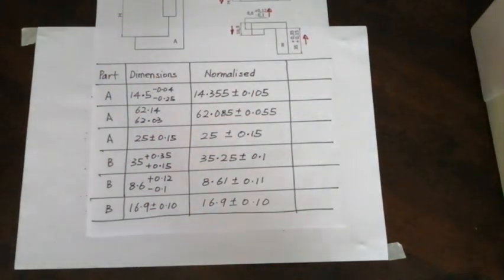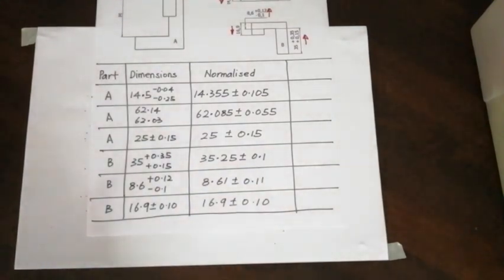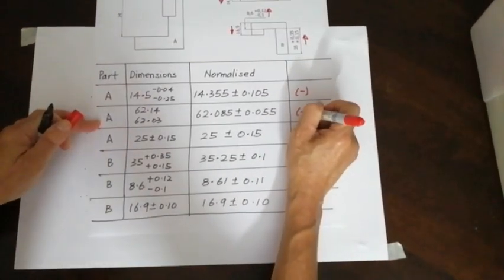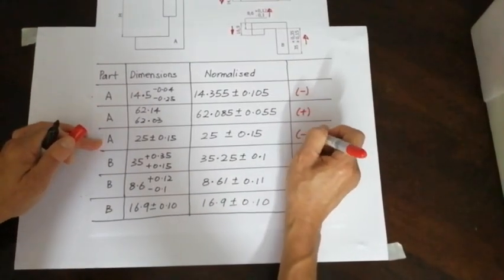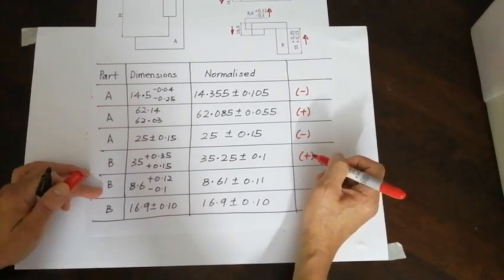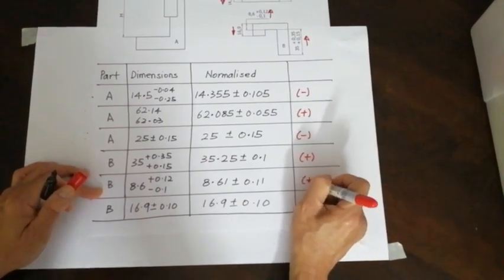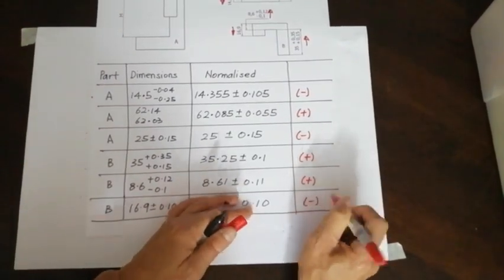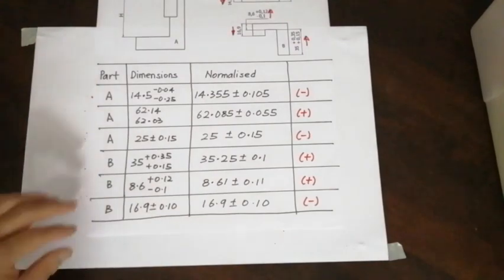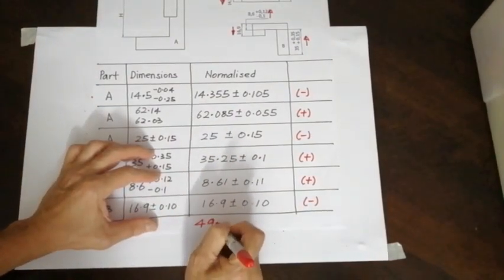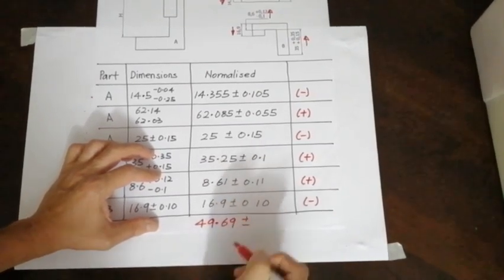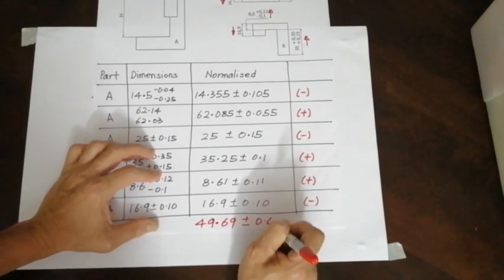Okay, now we will have to be very careful with the sign. The first one is going down, so it's going to be negative. The second one is going up, positive. The third one is coming down, negative. Then the fourth one is going up, positive. The fifth one is also going up, positive. And finally we have negative. So the grand total over here is going to be 49.69 plus and minus 0.62.